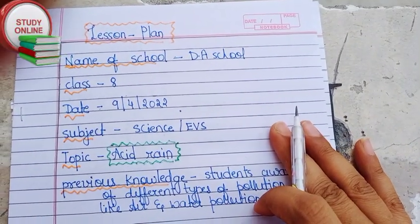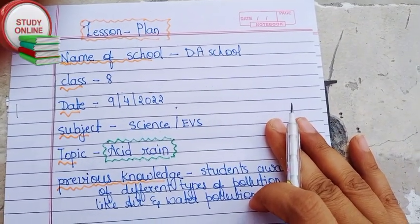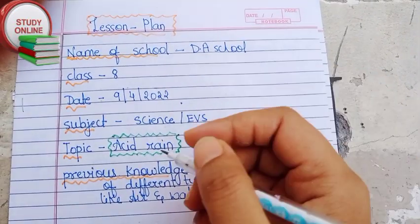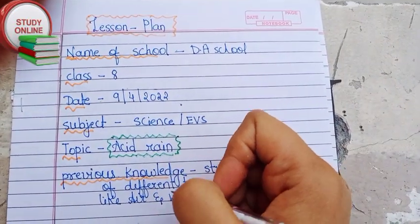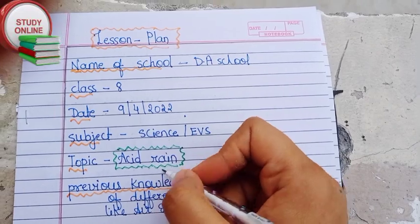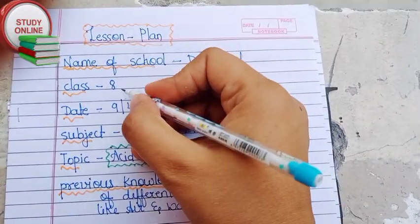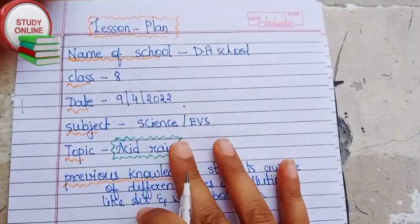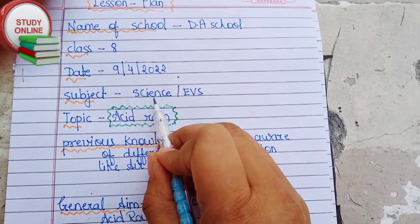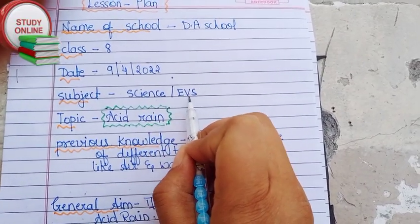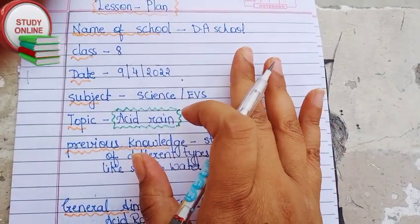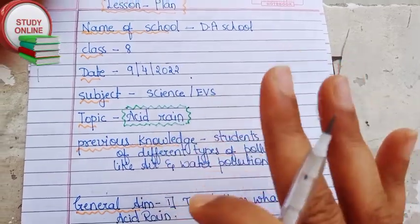Hello everyone, welcome back to my channel Anutan Online Study. Today in this video we will see how to make a lesson plan on the topic acid rain for Class 8. You can use this lesson plan for science, as well as this topic is available in EVS subject also.